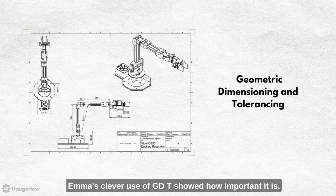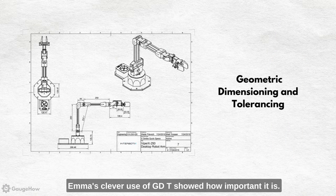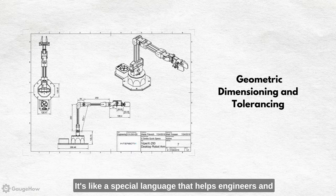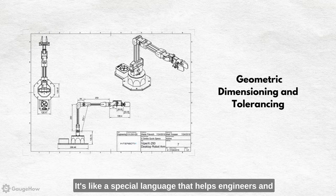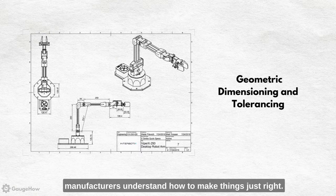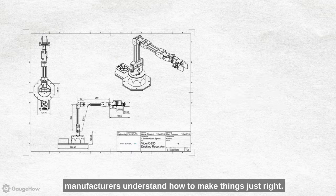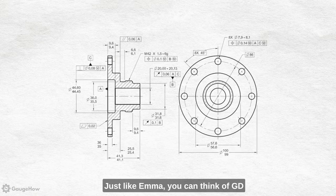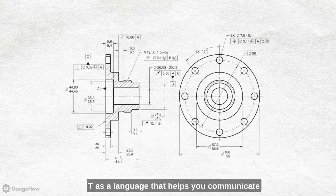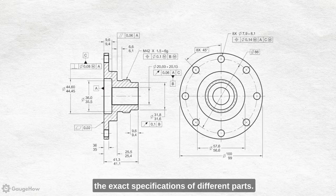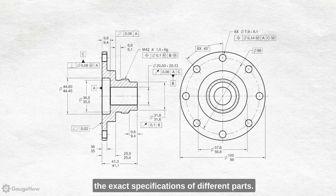Emma's clever use of GD and T showed how important it is. It's like a special language that helps engineers and manufacturers understand how to make things just right. Just like Emma, you can think of GD and T as a language that helps you communicate the exact specifications of different parts.